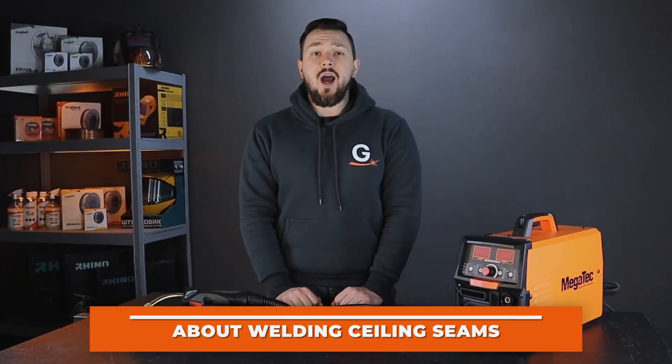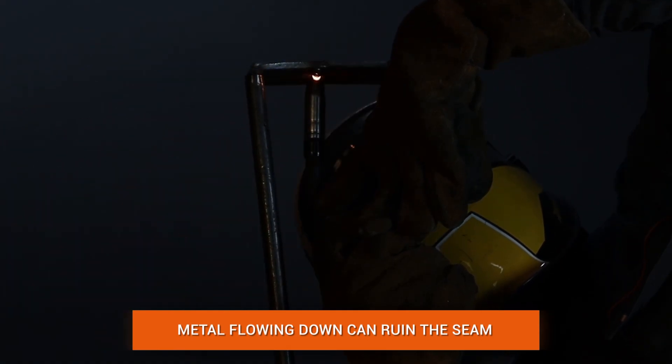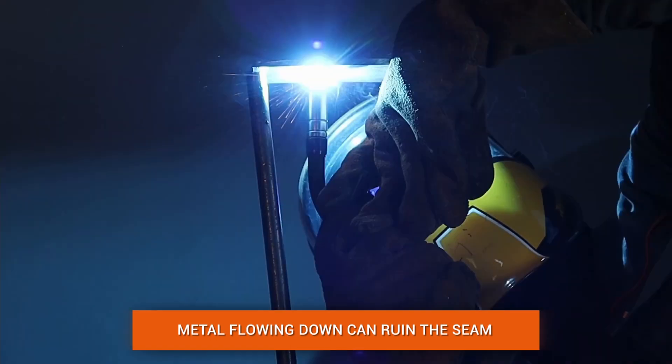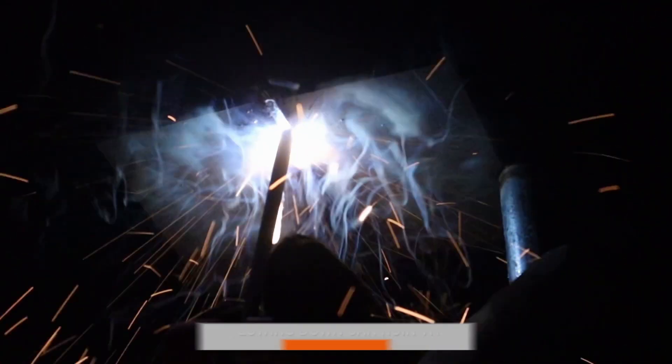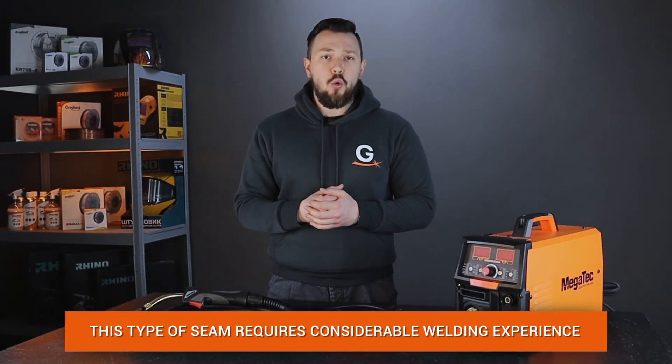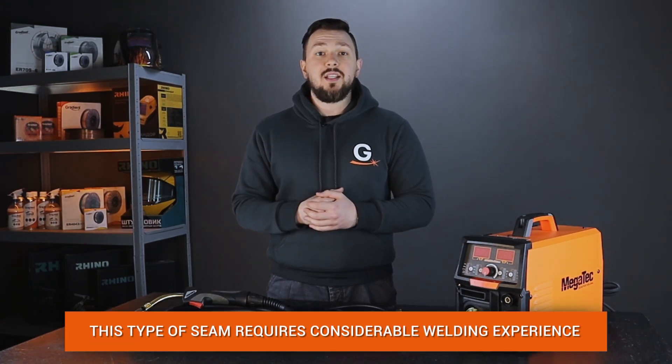Welding a ceiling seam is one of the most difficult welding processes. In the process, molten metal can drip down, which worsens the weld and poses a certain danger to the welder. This type requires considerable knowledge and skills to perform high-quality welding work.